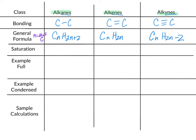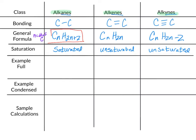Now let's look at saturation for each of these classes. Saturated means all carbon-carbon single bonds, and unsaturated means it has some kind of carbon-carbon multiple bond. Alkanes are the saturated type of compound, and alkenes and alkynes are both unsaturated. It is important to note that when we want to find out from a formula whether a compound is saturated or unsaturated, we will always want to compare the formula to that for an alkane with the same number of carbons. If the number of hydrogens matches what we would expect for an alkane, the substance is saturated; otherwise, if there are fewer hydrogens, it is unsaturated.